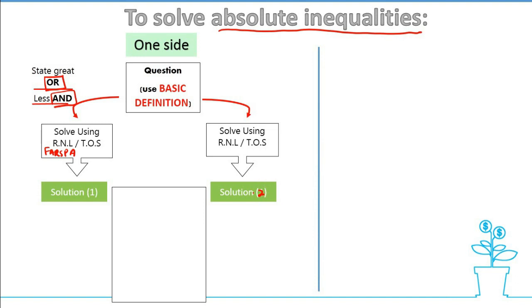Once you have your solution 1 and solution 2, don't forget to actually combine the answers together using number line. So AND is the intersection, and OR is the region that contains line. We're gonna go through this together.